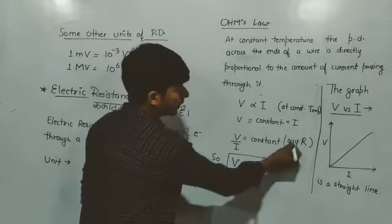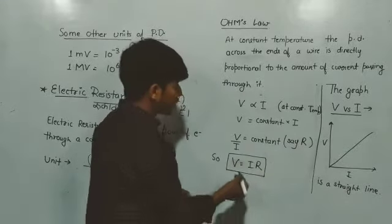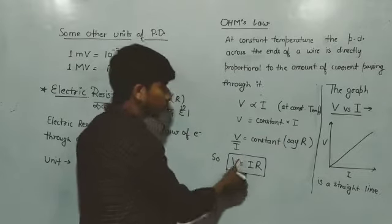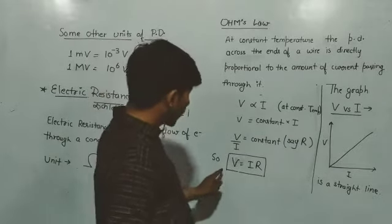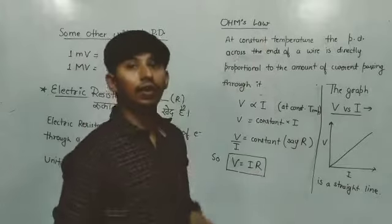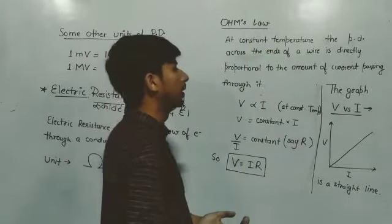So when I write at the place of this constant, I will write R, so it becomes V is equal to IR. You have to remember V is equal to IR is the Ohm's law formula.